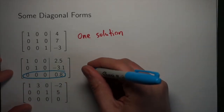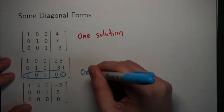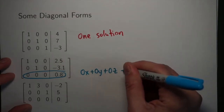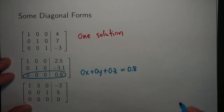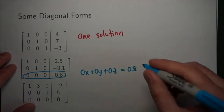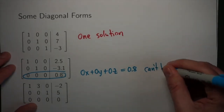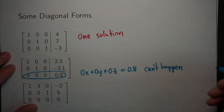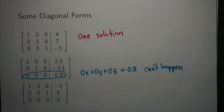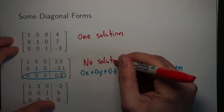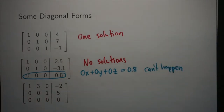With the second matrix here, we have this last row where everything canceled to leave us with zeros. If I write that in terms of the variables, I have 0x plus 0y plus 0z has to equal the right-hand side, which is nonzero. But zero times anything is zero, so what we're saying is zero has to equal that nonzero value, which can't happen. Because this is impossible, if our diagonal form has a row of zeros and then something else after the line, we end up with no solutions.